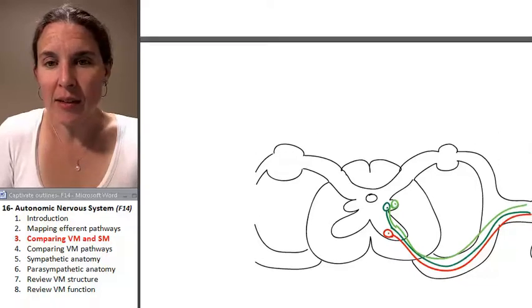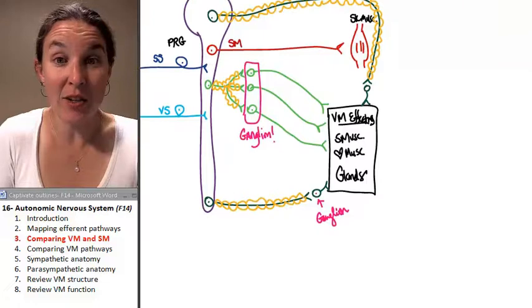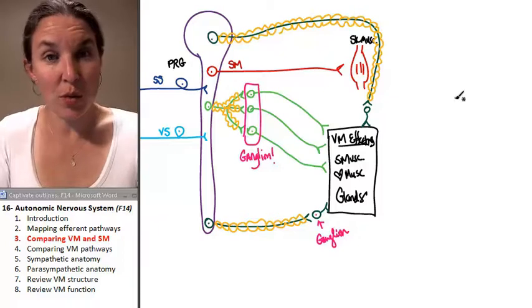Let's go back and look at this again and see if we can identify some other anatomical characteristics that we can list to distinguish between our two motor pathways.